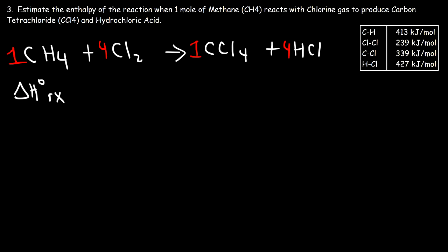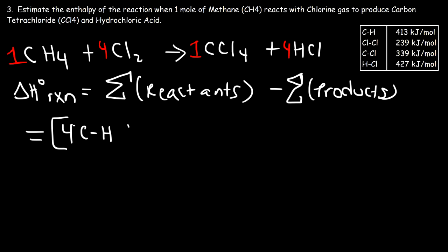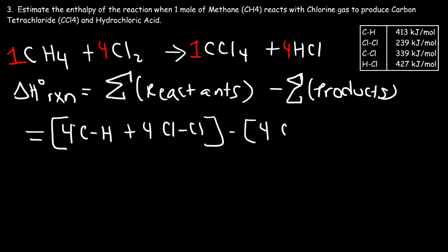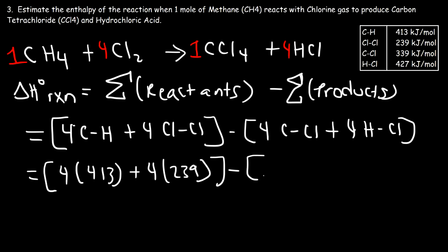Now we can estimate the enthalpy of the reaction using the formula: sum of bond energies of the reactants minus sum of bond energies of the products. On the reactant side, methane has four C-H bonds and chlorine has one Cl-Cl single bond; with four Cl₂ molecules that's four Cl-Cl bonds. For the products we have four C-Cl bonds and four H-Cl bonds. Replacing values: C-H is 413, Cl-Cl is 239, C-Cl is 339, and H-Cl is 427.